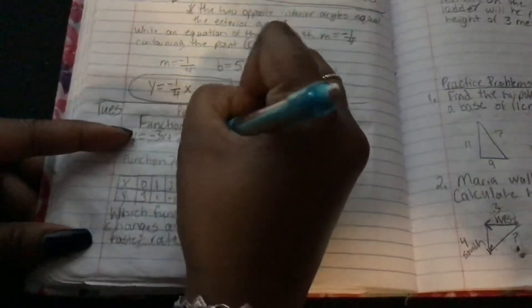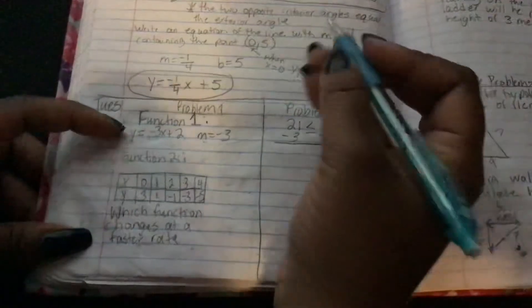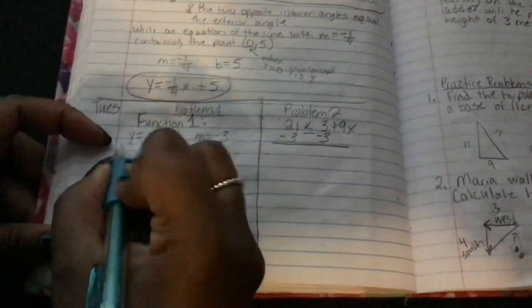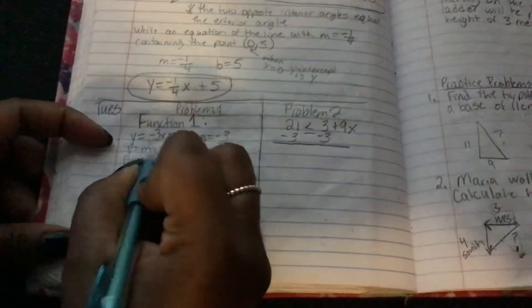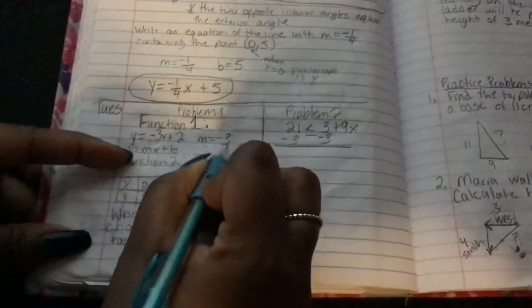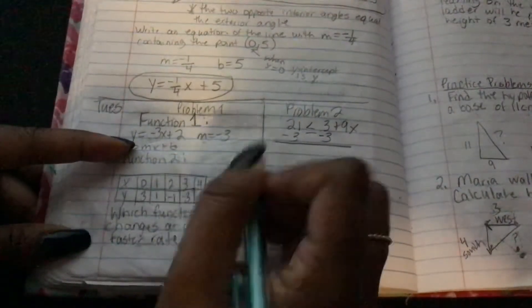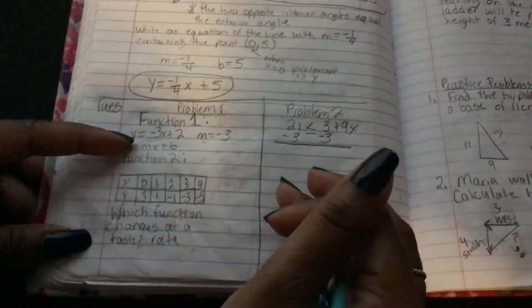So the rate here, m, is going to be negative 3. Because remember, when an equation is written in y equals mx plus b form, the number that's attached to x is going to be your slope. So this is going down, this line has a negative slope, so that means it's going down by 3.